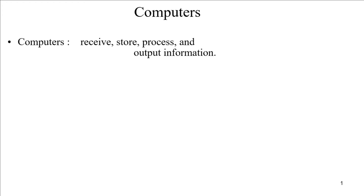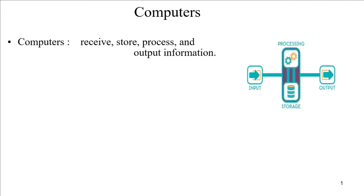Welcome. We will now discuss computer components and software. Computers receive, store, process, and output information. This can be visualized as input given to memory, from there it is processed, and output is generated. A computer is basically comprising of receiving input, storing information, processing information, and outputting information as required.